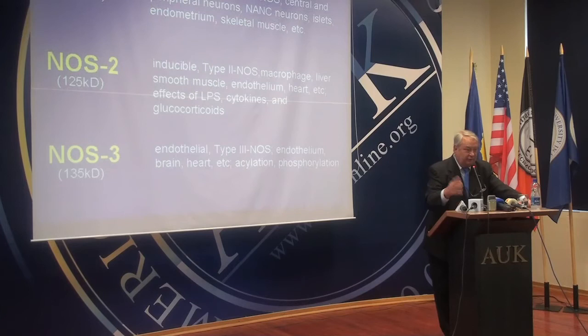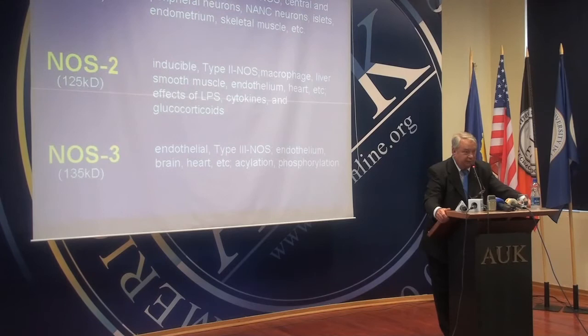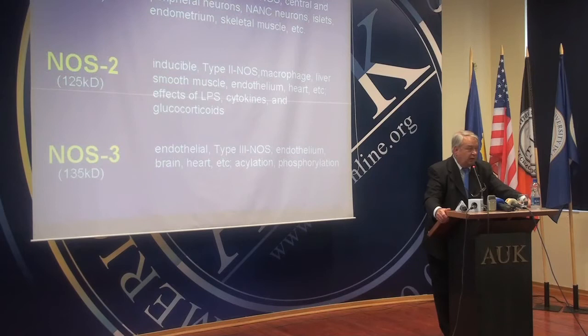Most of the time, you don't see the inducible isoform in tissues. It's not there — the transcript is not there, the protein is not there, the activity is not there. In order to see it, you have to expose the tissues and cells to pro-inflammatory cytokines: IL-1, IFN-gamma, TNF-alpha, et cetera. When you do that, you stimulate the transcription factors to make NOS-2. So if you see NOS-2 transcripts or protein, that's a biomarker for inflammation.